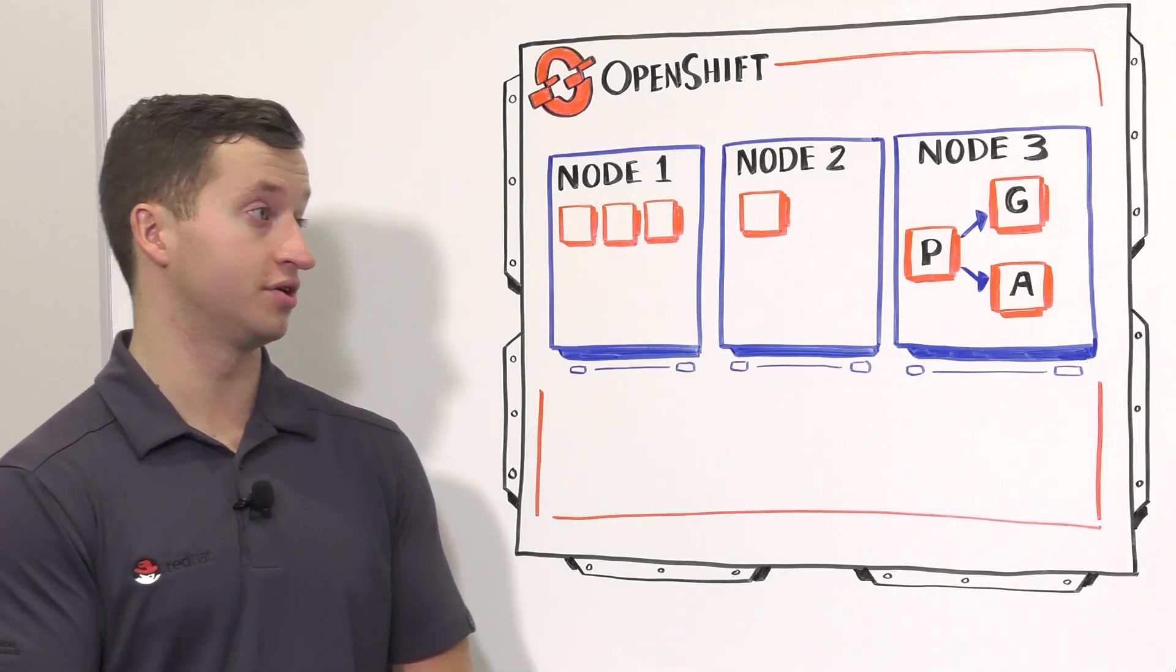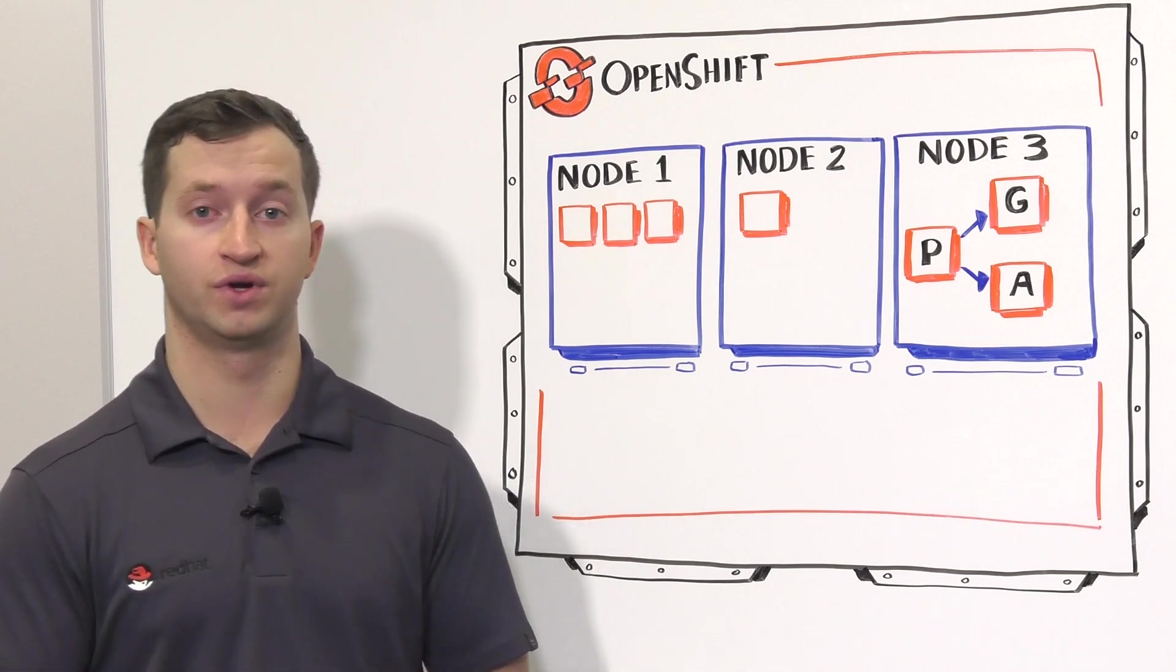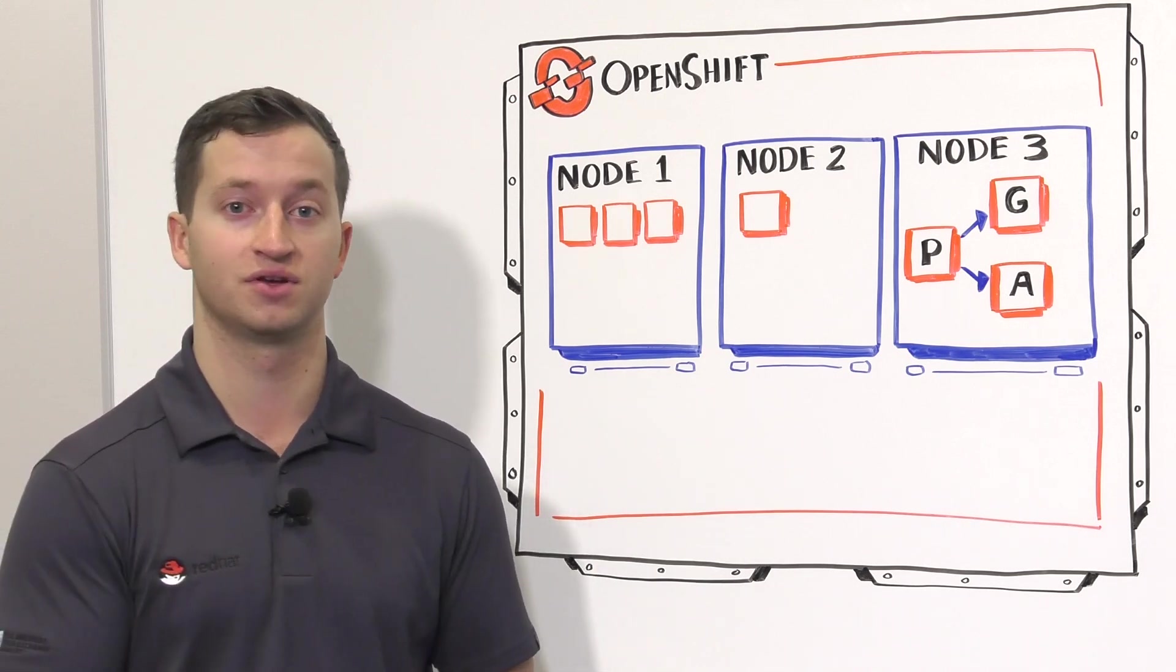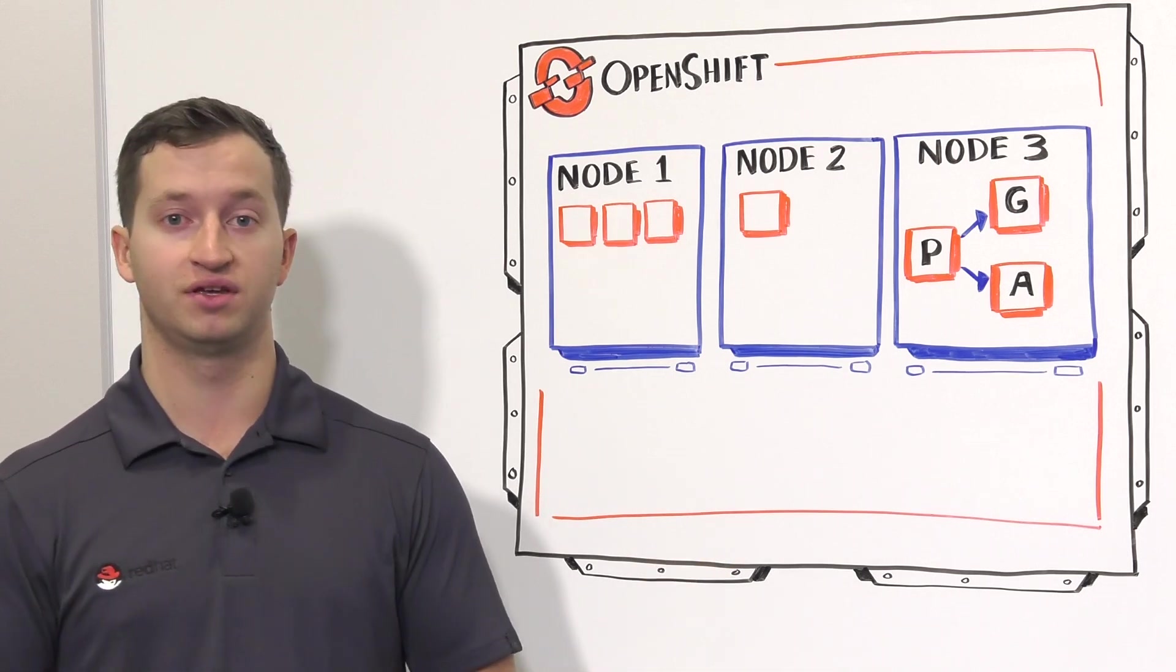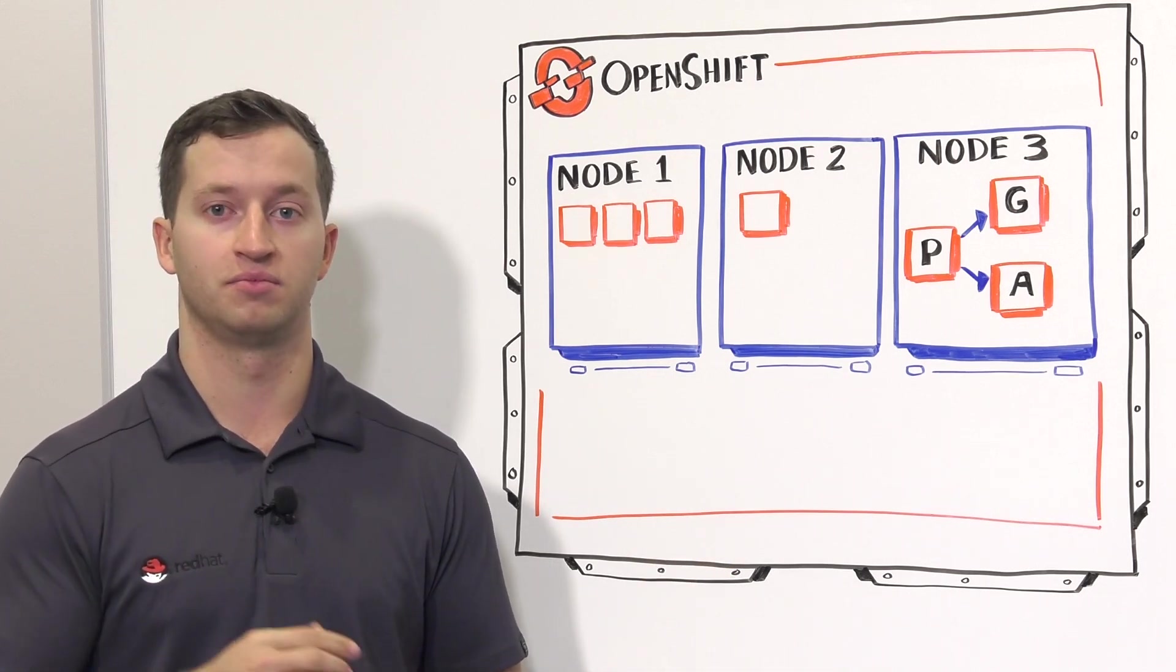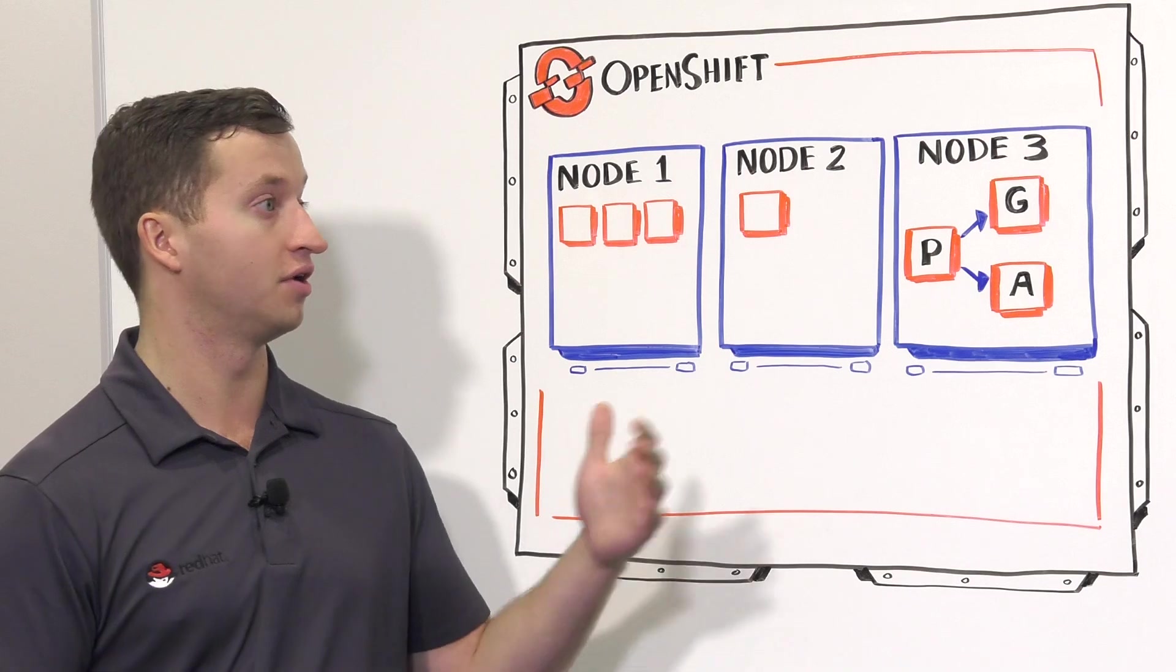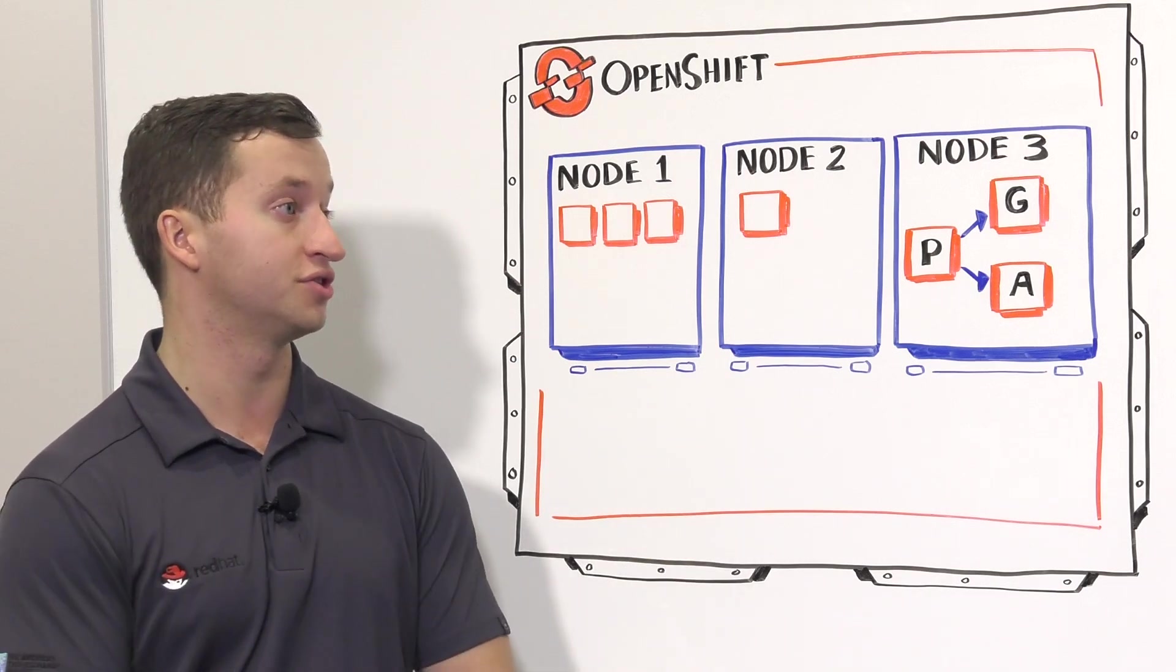So there's also an alert manager component that can be really useful when your operations team is away from the cluster, and it, again, uses that Prometheus data and sends alert messaging based off a node going down or overconsumption of your cluster.